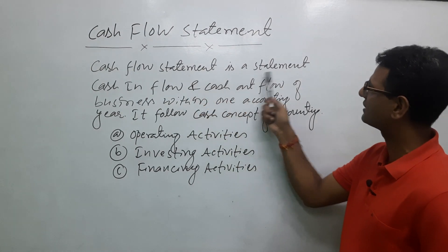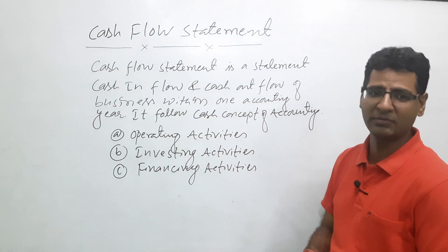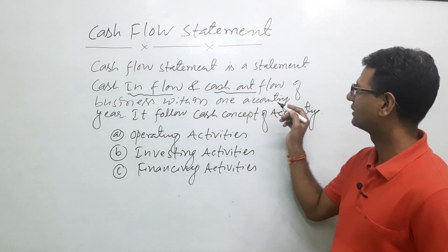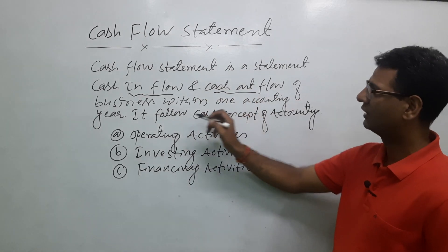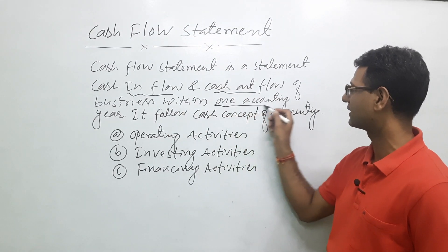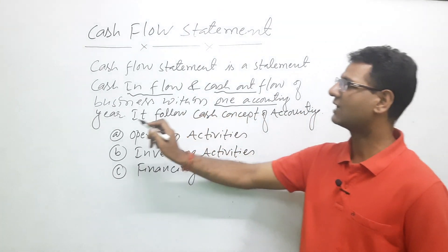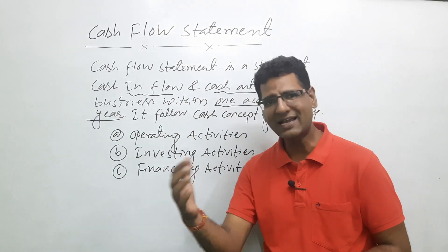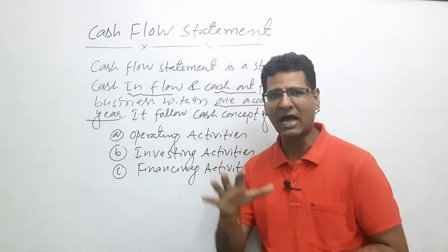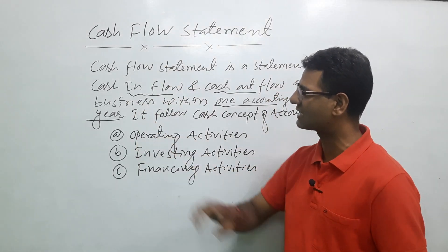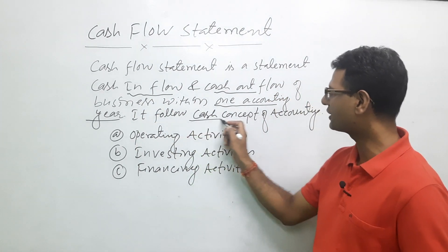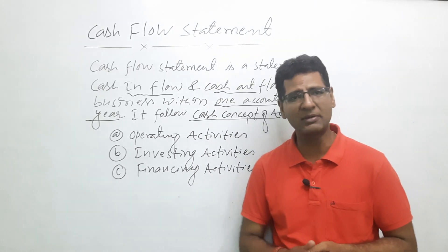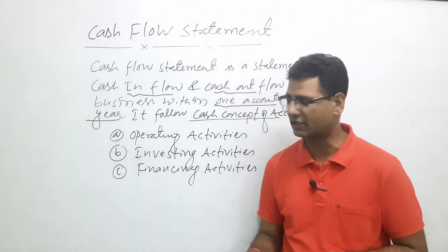Cash flow statement is a statement of cash in and out — cash in and cash out — the flow of cash in and out of a business within one accounting year. It is a statement that calculates where cash came from and where cash was utilized. It follows the cash concept, so non-cash transactions are not recorded.